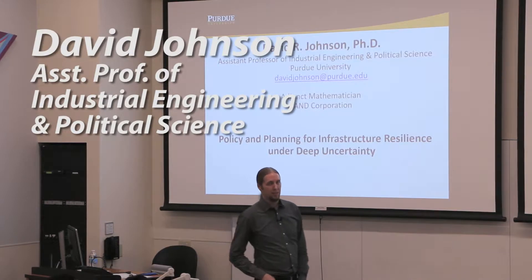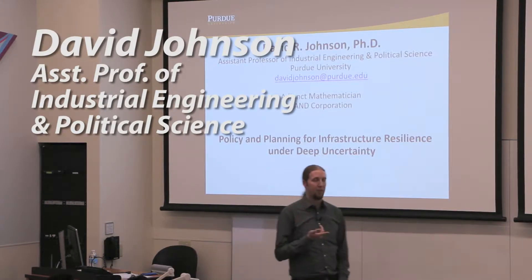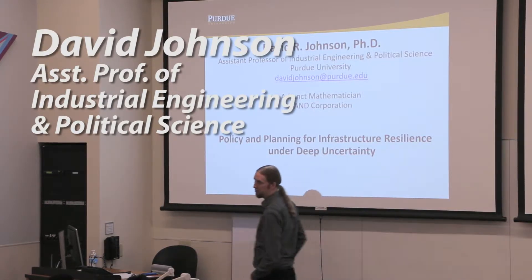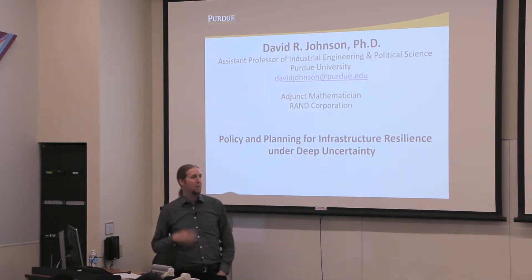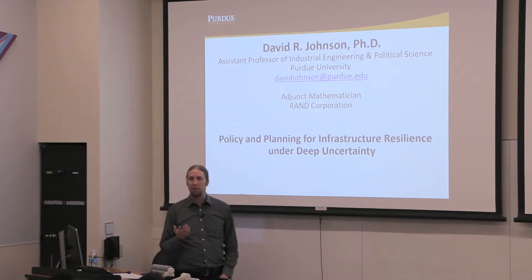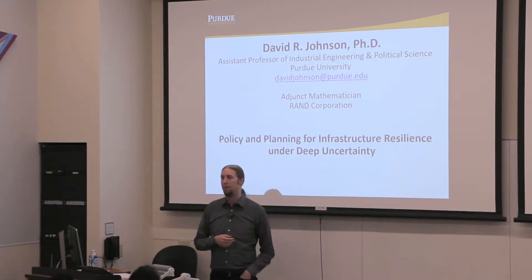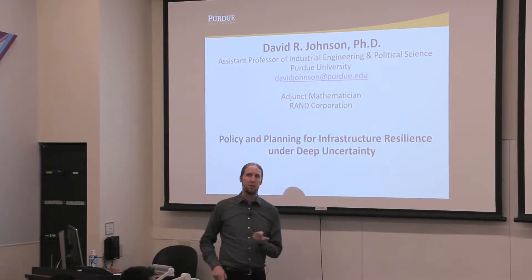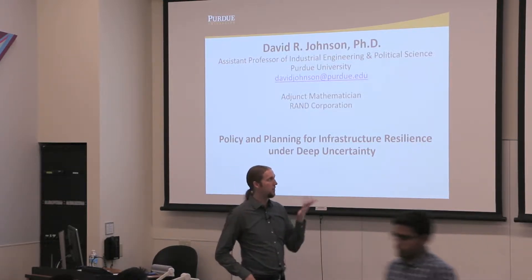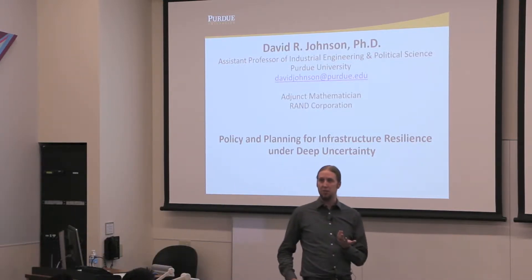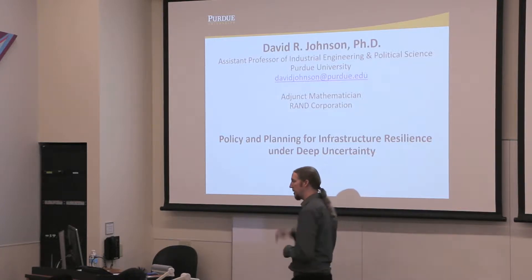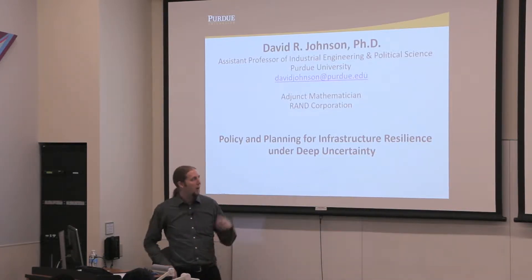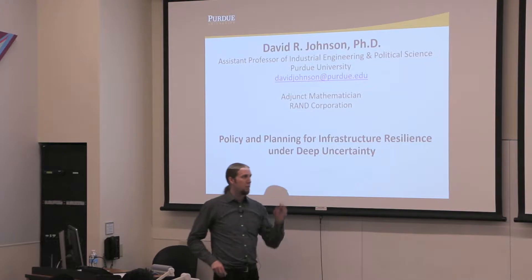I'm David Johnson, an assistant professor with a joint appointment in the political science department primarily because I do a lot of environmental policy work. I previously worked at the Rand Corporation as a mathematician, which is where I got my PhD in policy analysis, but my background is a bachelor's and master's in math.